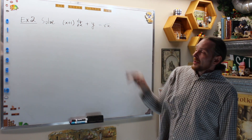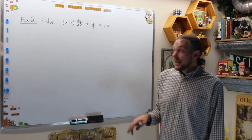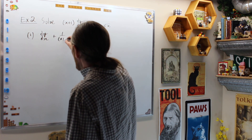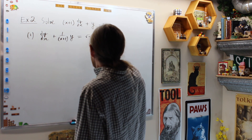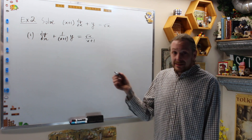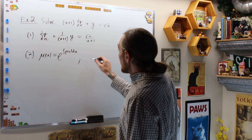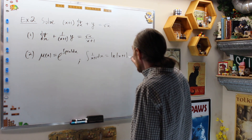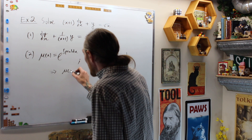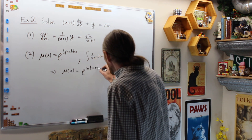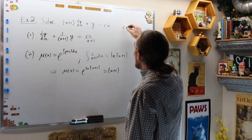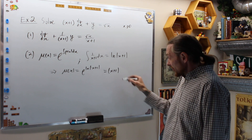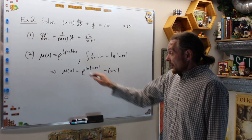Example 2: solve this differential equation, which is linear first order but not in standard form. Step 1, put it in standard form by dividing: dy/dx plus 1 over (x plus 1) times y equals root x over (x plus 1). Step 2, find the integrating factor. p of x is 1 over (x plus 1), so the integral of 1 over (x plus 1) dx equals the natural log of the absolute value of x plus 1. Therefore mu of x equals e to the natural log of (x plus 1), which gives x plus 1. Since x is greater than or equal to 0 we can drop the absolute value, so our integrating factor is x plus 1.